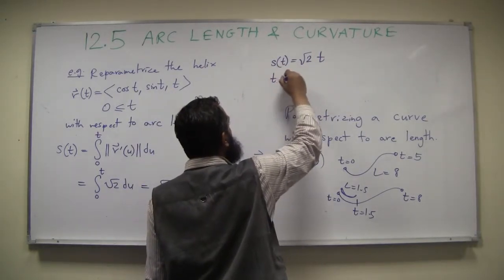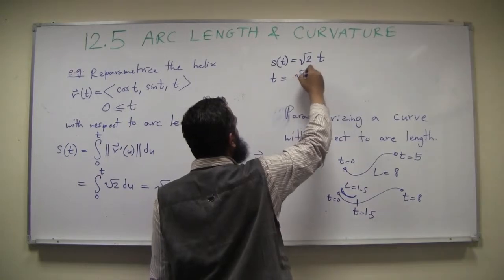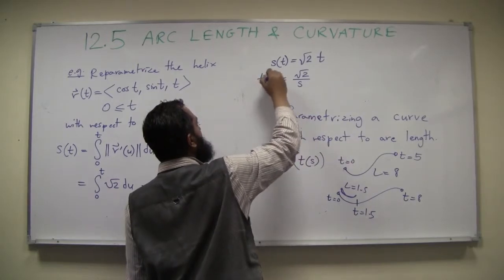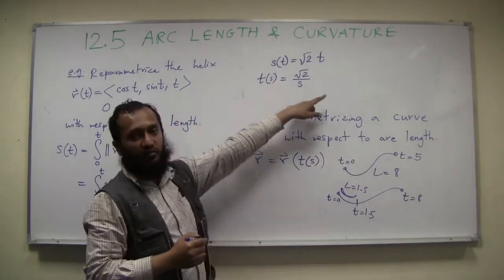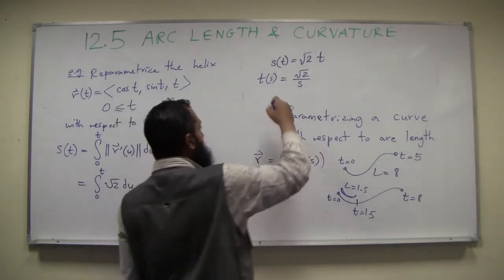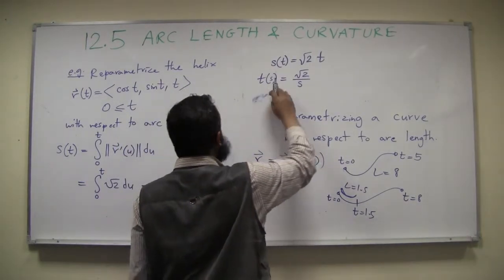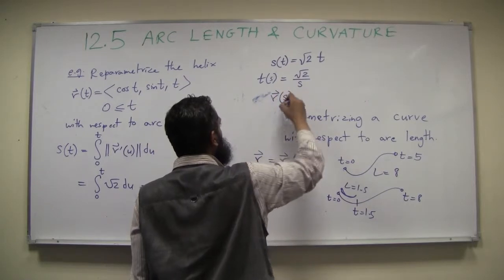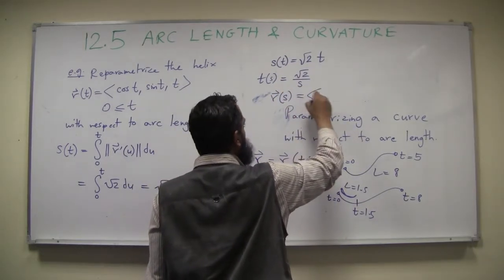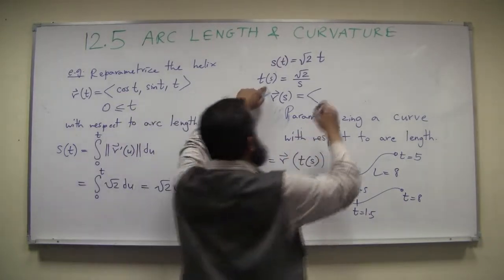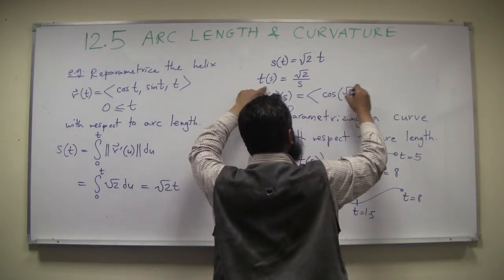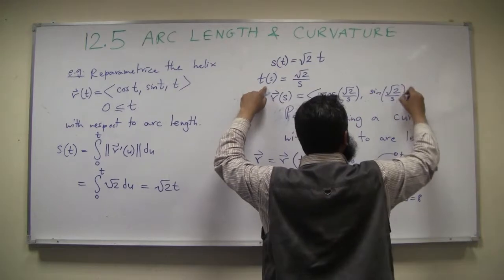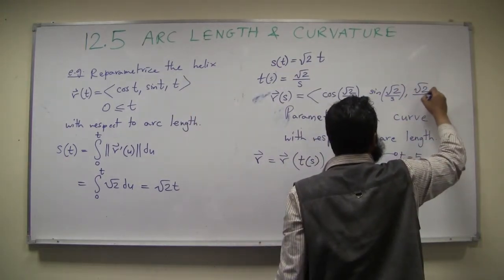So, what is t in terms of s? t is s over square root of 2, right. So, that's the relationship I'm looking for. I can write it as t as a function of s is this one, right. I solve for t in terms of s. And so, then, my parameterization would be, I'll put the t of s in my parameterization. So, I will get r of, it will be in terms of s, will be, I'll put cos, cosine of t. t is this thing. So, it will be cosine of s over square root of 2, sine of s over square root of 2, and t is just s over square root of 2, okay.